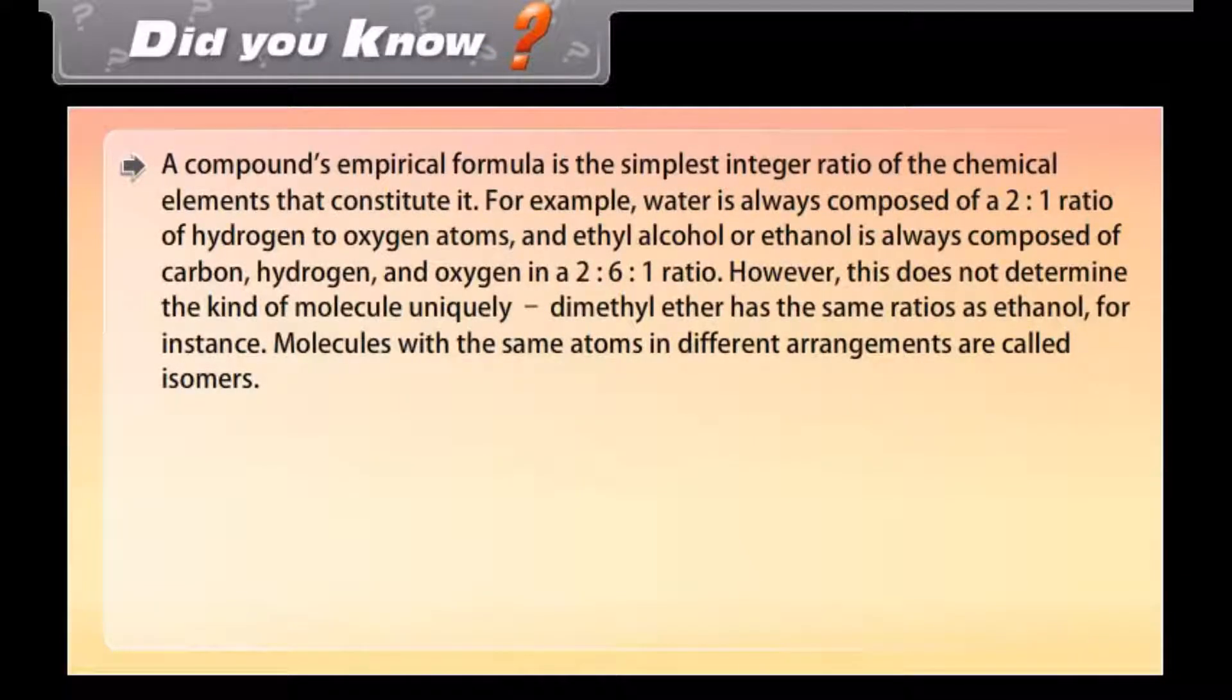Did you know? A compound's empirical formula is the simplest integer ratio of the chemical elements that constitute it. For example, water is always composed of a 2 to 1 ratio of hydrogen to oxygen atoms, and ethyl alcohol or ethanol is always composed of carbon, hydrogen and oxygen in a 2 to 6 to 1 ratio. However, this does not determine the kind of molecule uniquely. Dimethyl ether has the same ratio as ethanol, for instance. Molecules with the same atoms in different arrangements are called isomers.